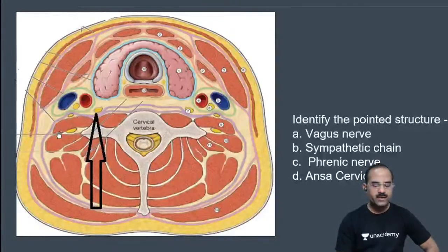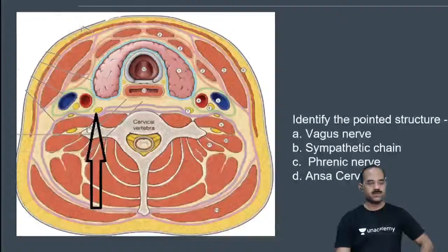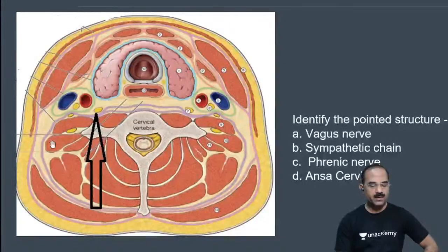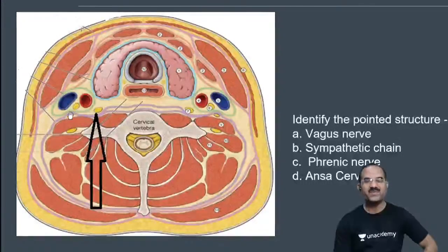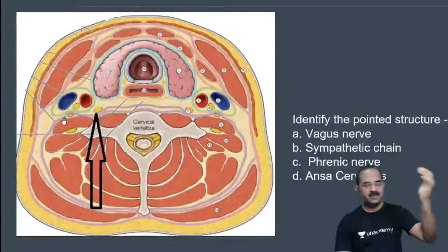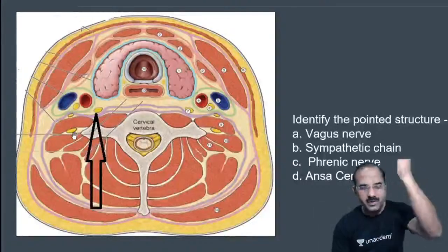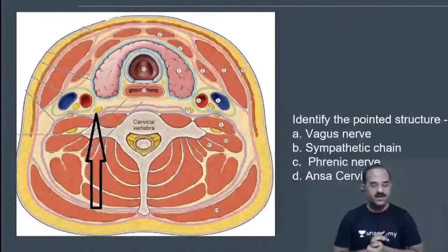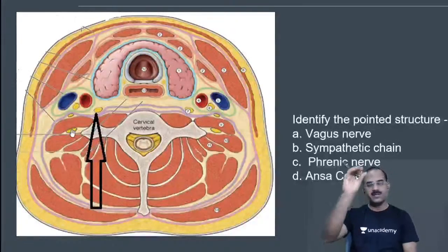What is this muscle? This is the scalenus anterior. And what is this nerve? The nerve lying on the scalenus anterior, covered in front by the pre-vertebral fascia — that is the phrenic nerve.